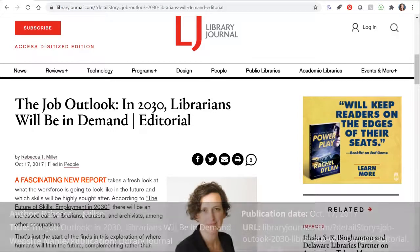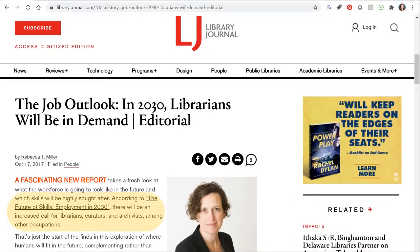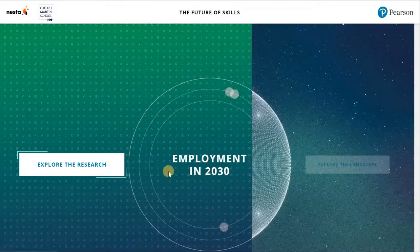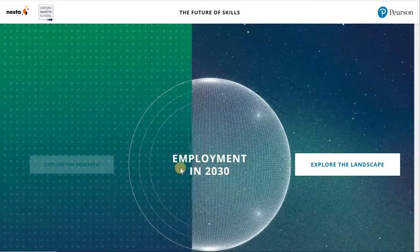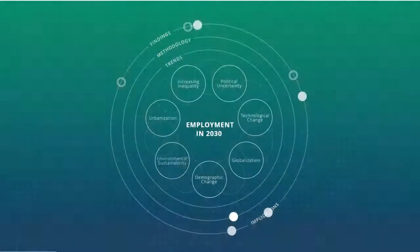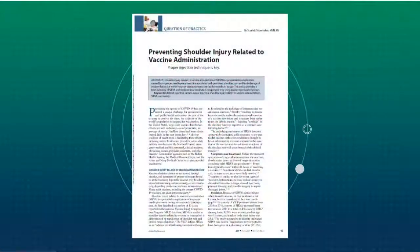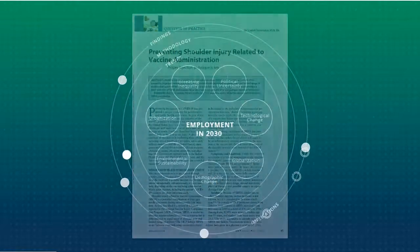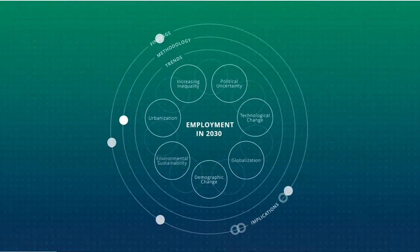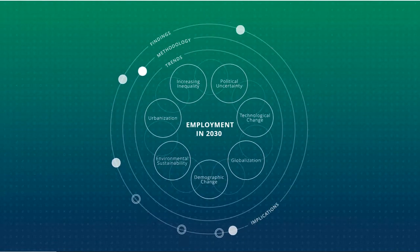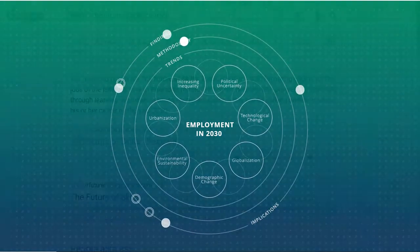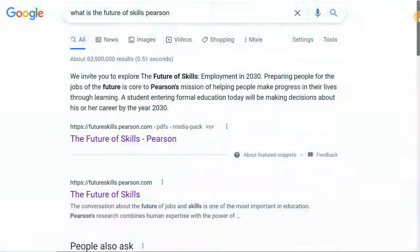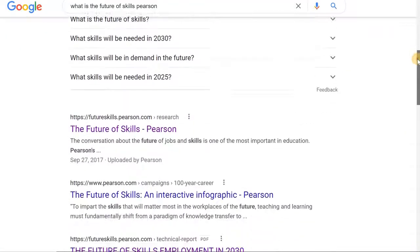Let's say I wanted to track down the source of the claim this article is making about librarians being in more demand in 2030. I want to evaluate the report myself. This wasn't what I was expecting at all — it doesn't look like a report. Keep in mind that visualization of research and sources in general are changing, and it's becoming harder to tell visually what it is you're looking at on the web. If you come across a source you don't know how to navigate or cite, don't give up. Use those lateral search skills to find out more about it.